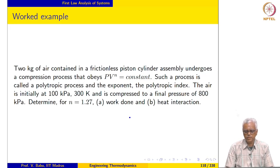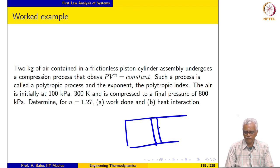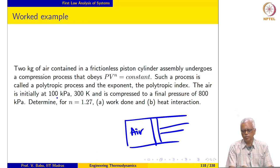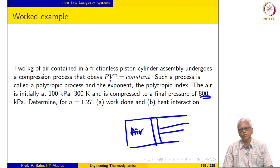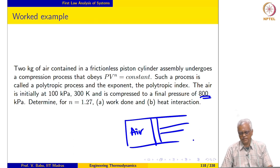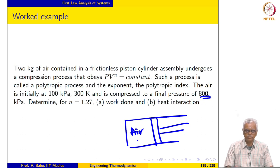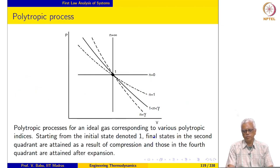Here we have a frictionless piston-cylinder mechanism. This initially contains air, and the air in the cylinder is compressed from 100 kilopascal to a final pressure of 800 kilopascal. The process is given as P·v^n equals constant, where n equals 1.27. Such a process is called a polytropic process, with n being the polytropic index. We are asked to evaluate the work done and the heat interaction. The assembly is not insulated — only frictionless — so there will be some heat interaction between the cylinder and the surroundings.